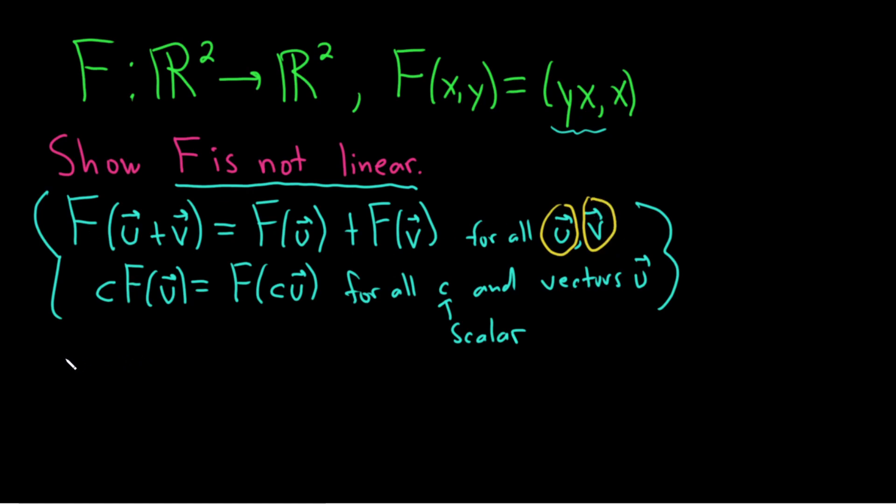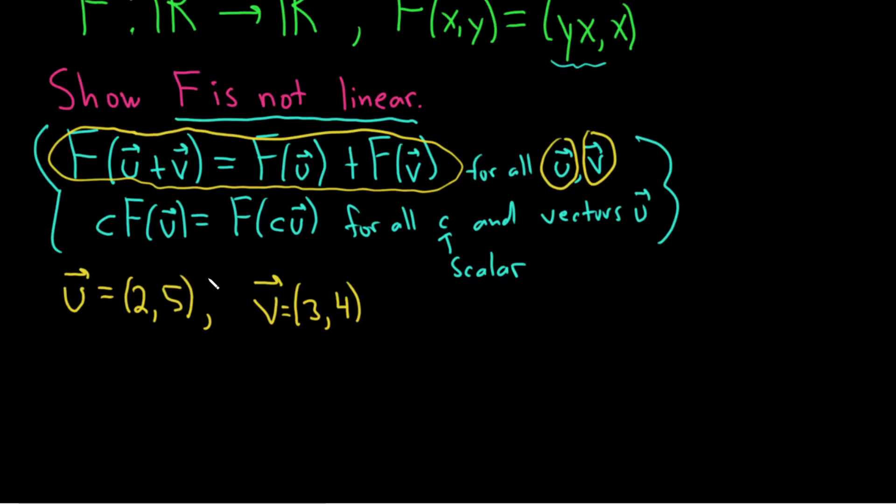So I'm thinking, I'm just going to make them up and it should work. Let's try u equals 2 comma 5. And v equals, let's try 3 comma 4. And let's just see what happens with these vectors. So we need to show, let's show that this first condition here is completely violated. So let's focus first on the left-hand side. So to do that, we need to add u and v.